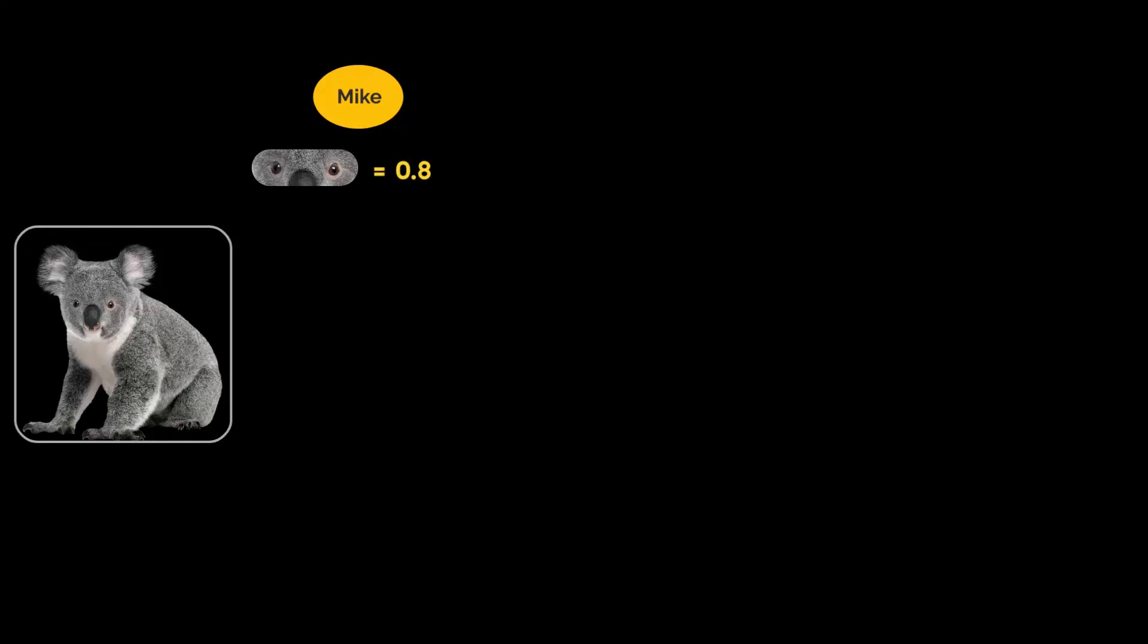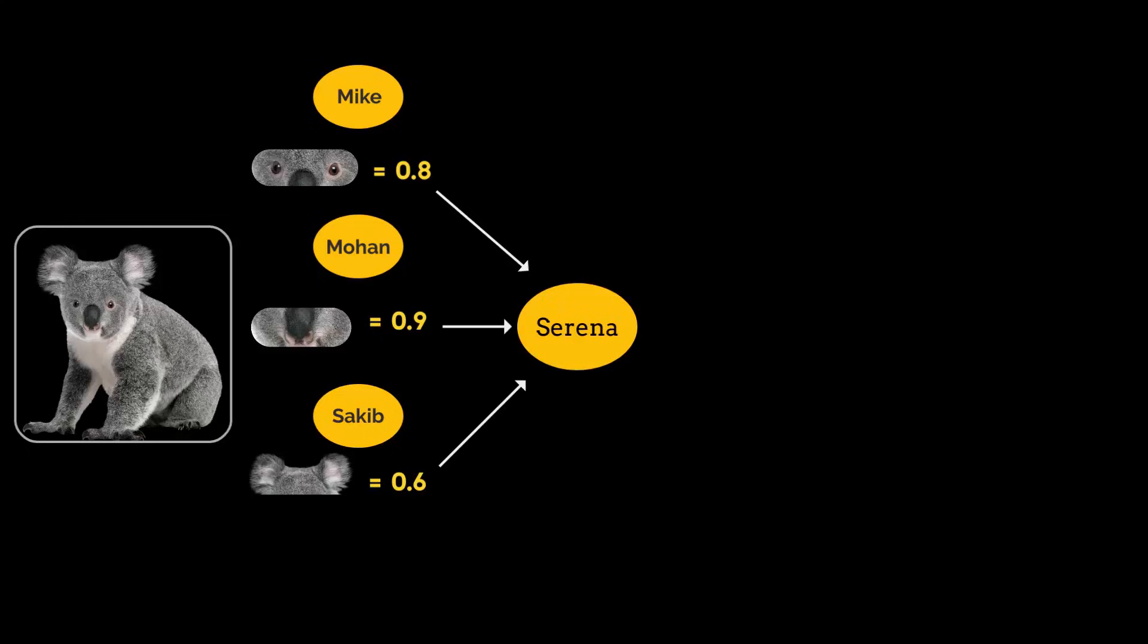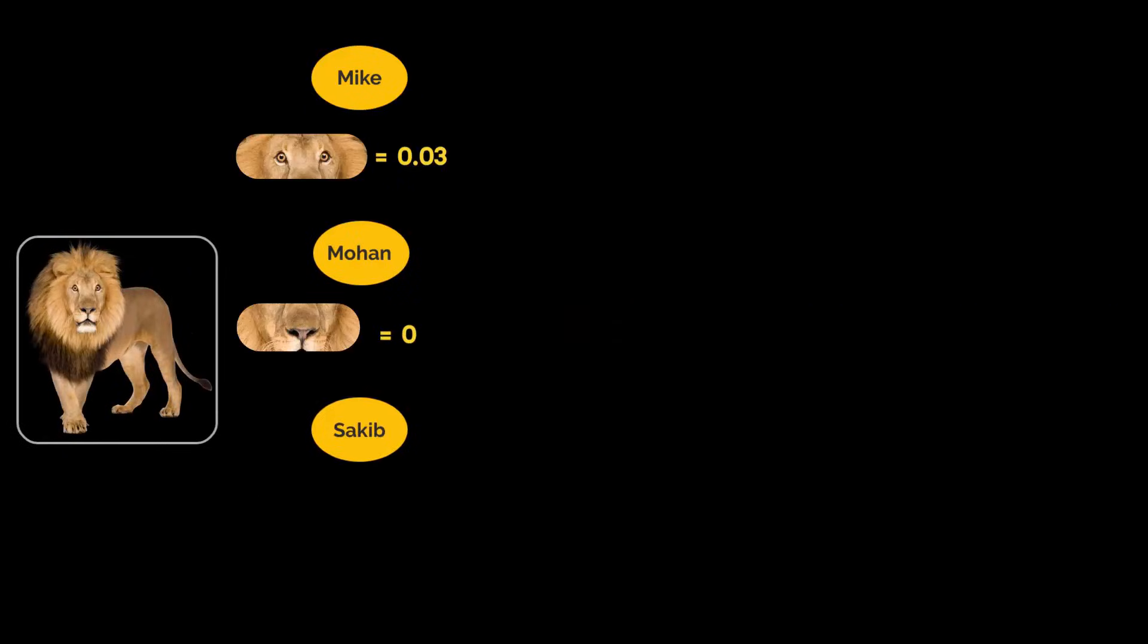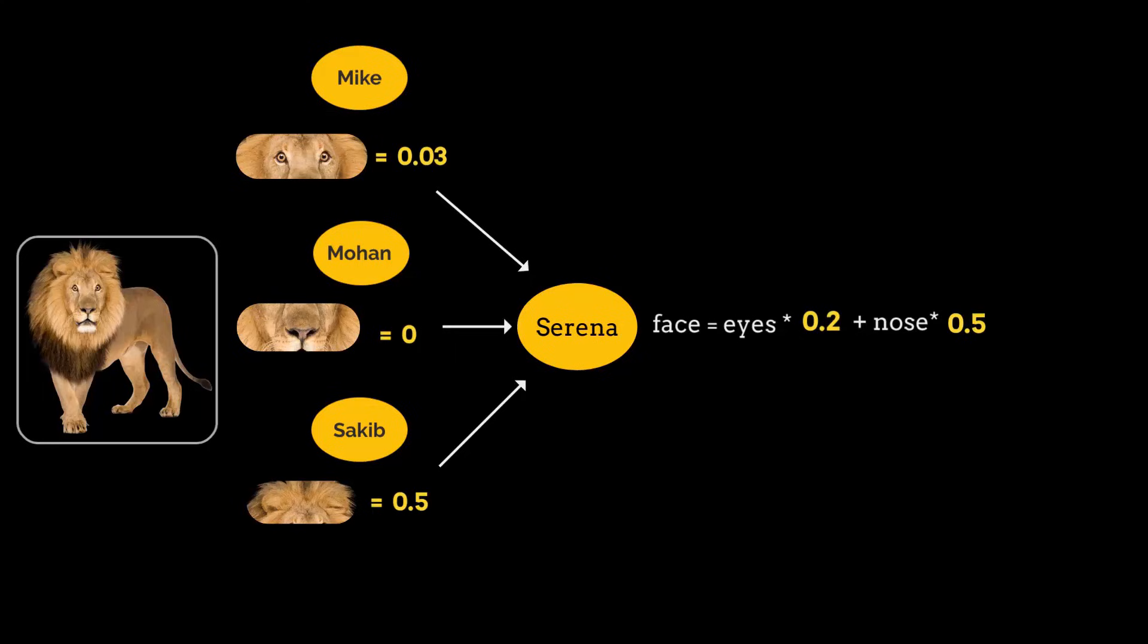For example, in this particular case I have given sample scores by each individual person, and Serena computes the face score to be 0.79. So if anything is more than 0.5, it means it is koala's face. Similarly, if there is a lion's image, you will see that based on the score, the face score will be 0.15, which means it is remotely looking like koala's face here.